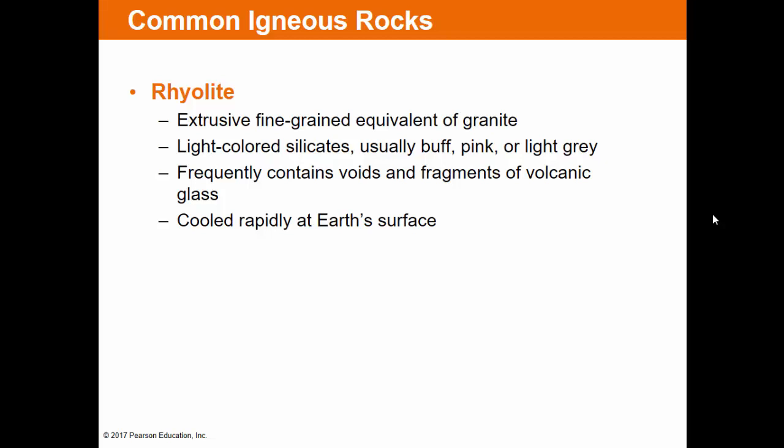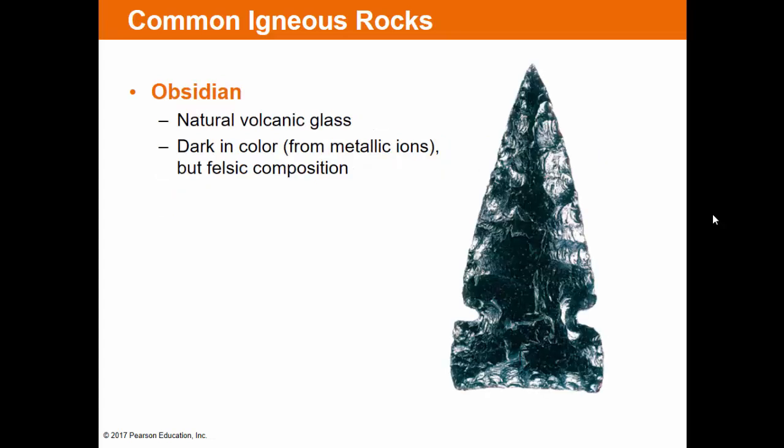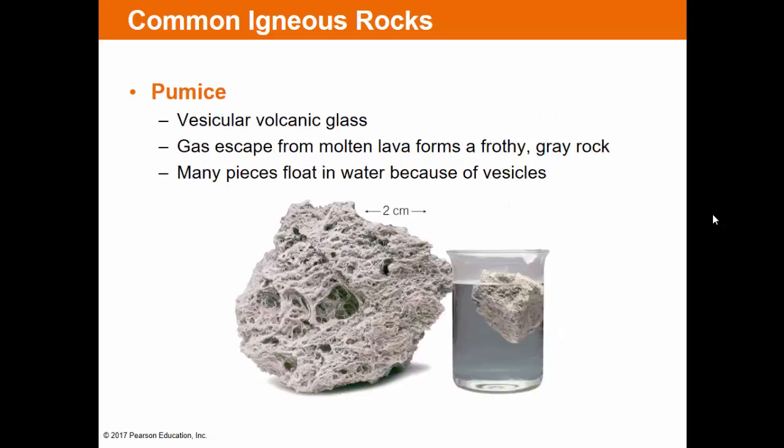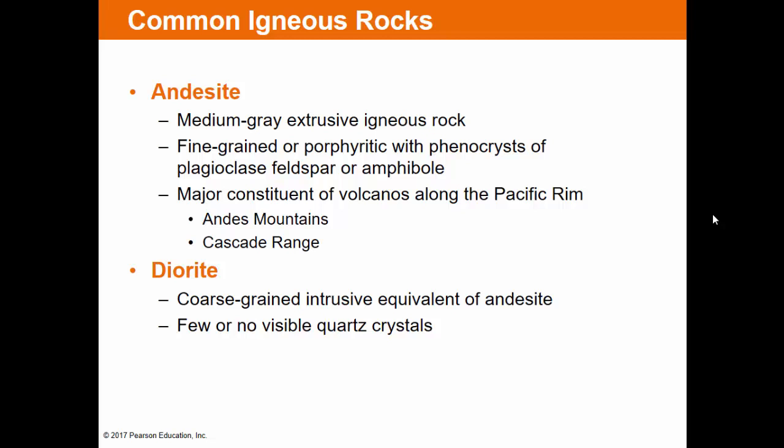Rhyolite is light-colored — pink, buff, or light gray — sometimes with voids and fragments of volcanic glass, and it cooled rapidly at the surface. Obsidian is natural volcanic glass, typically dark due to metallic ions even though the material is largely transparent. Pumice is very vesicular and has such low density it actually floats in water. Andesite is a medium-gray extrusive igneous rock that formed at the surface, often at continental margins. The Andes Mountains are named for andesite.